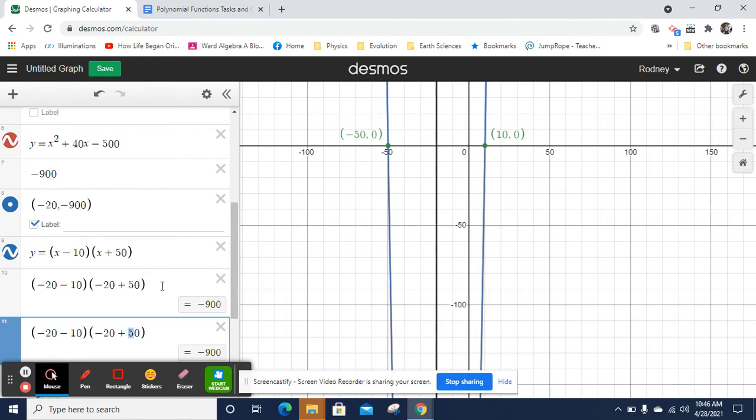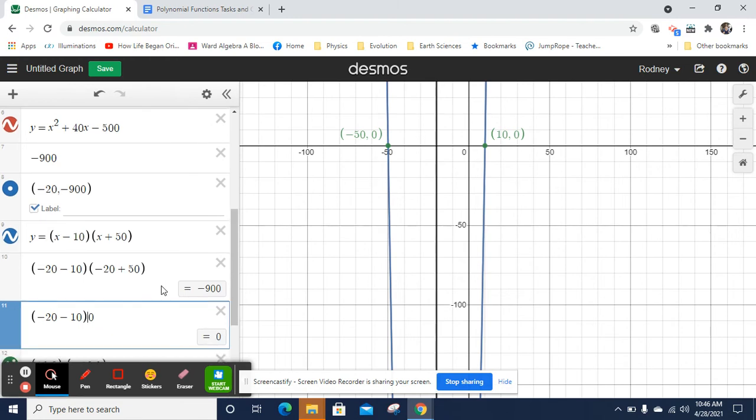But negative 20 plus 50 is going to be 30. And negative 20 minus 10 is going to be negative 30. So I get negative 30 times 30. And you're going to get this pattern, actually, where it's the negative times the positive. And we get negative 900 again. So I've plotted this.